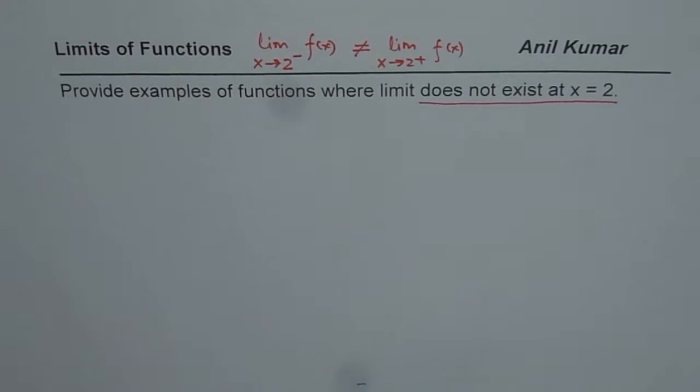In each and every example you have to see for yourself what is the limit of the function as x approaches 2 from the left side and what is the limit for the function as x approaches 2 from the right side. If they are different, then it does not exist. These are the examples which we are trying to consider.